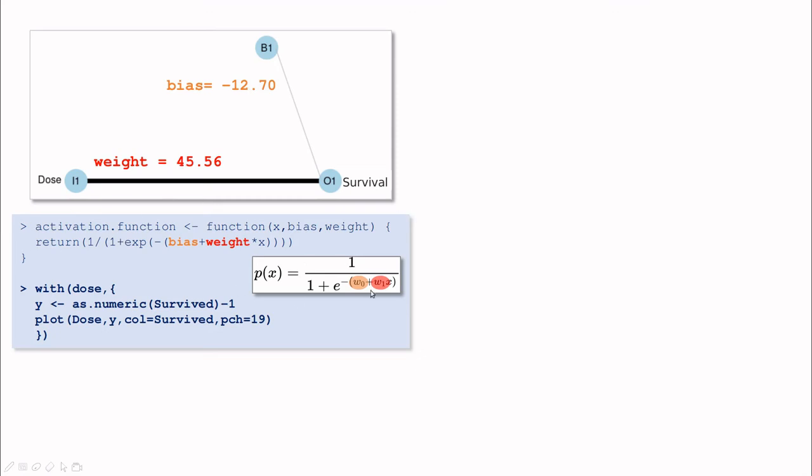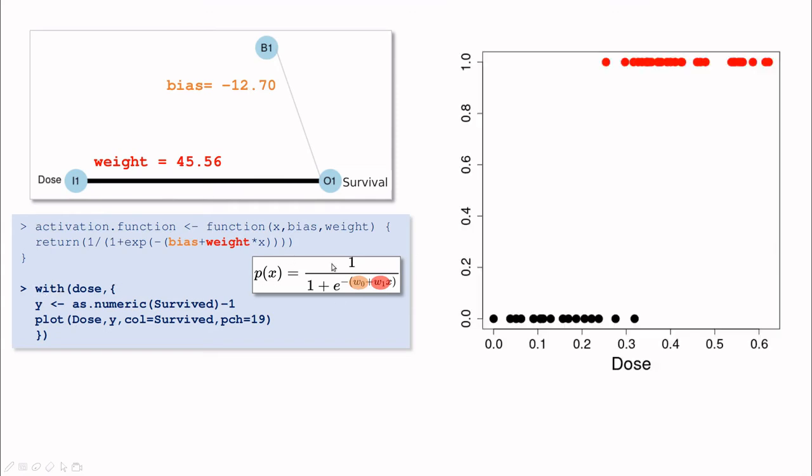Remember, our activation function was like this, this is bias, and this is the weight. And I'm going to plot these numbers, and I'm going to play a little bit with this function. So what if we take dose equals zero, let's do some mathematics here. Let's take the weight, 45.56 times zero, plus the bias, in this case it's simply the bias, then plug this into this activation function, and we get this number. And this number is almost zero, so let's plot this number here.